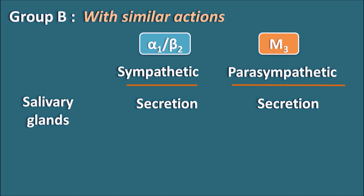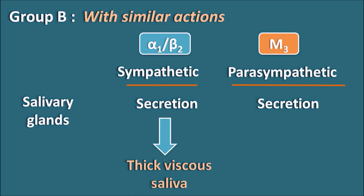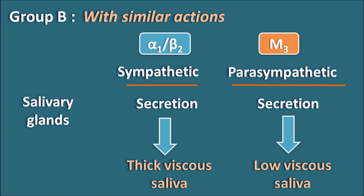There is a small difference between these two actions. The sympathetic system can produce a thick and viscous saliva, whereas the parasympathetic system can produce a low-viscosity saliva. Salivary secretion is more pronounced with the parasympathetic system, which produces less viscous saliva, but the sympathetic system produces more viscous saliva.